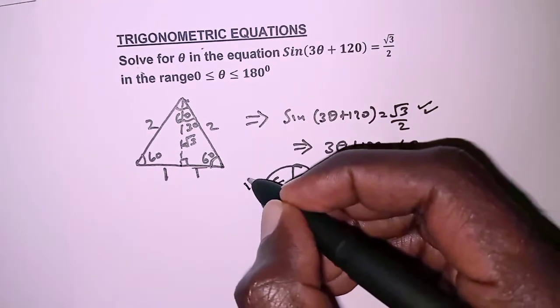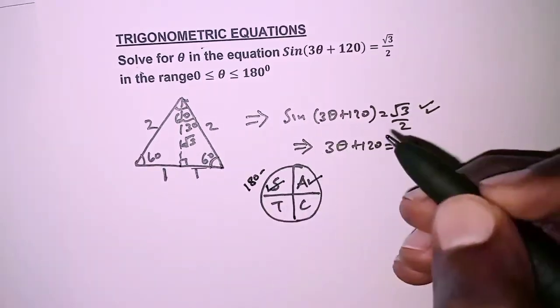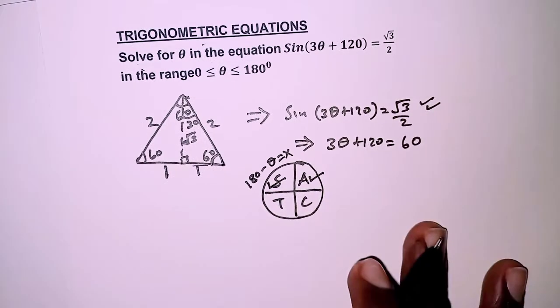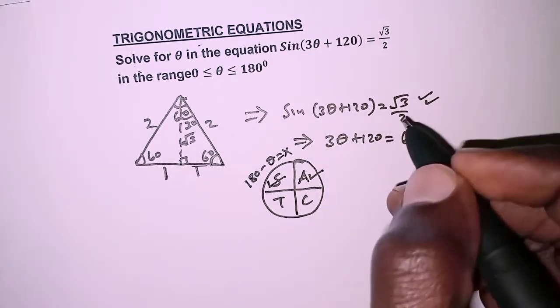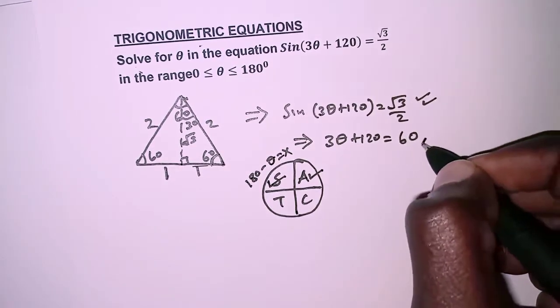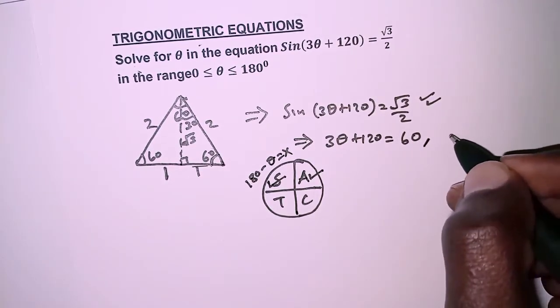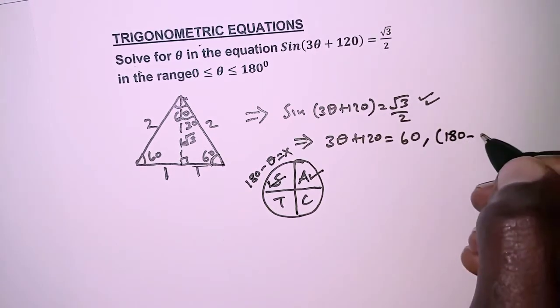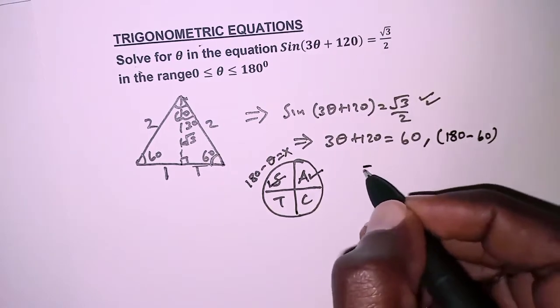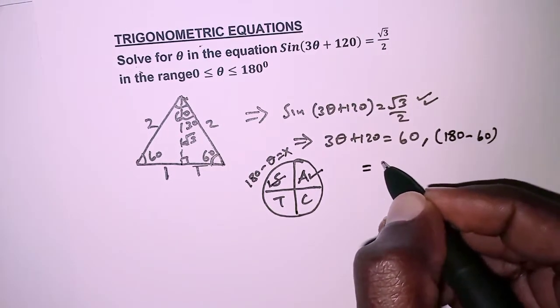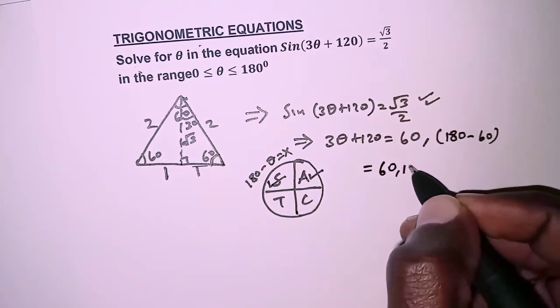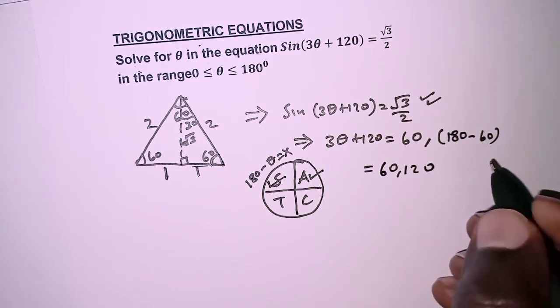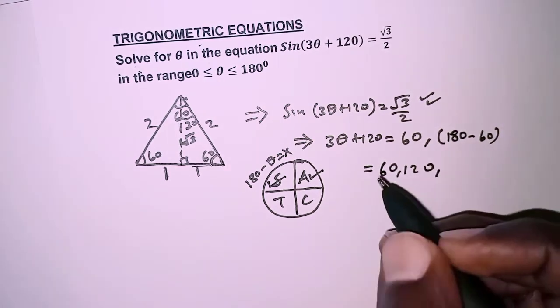At this particular point we get the angle we are looking for by simply having 180° minus the acute angle theta. So that means the next angle we are interested in is 180° minus the acute angle. So we are going to have 60° and 120°.